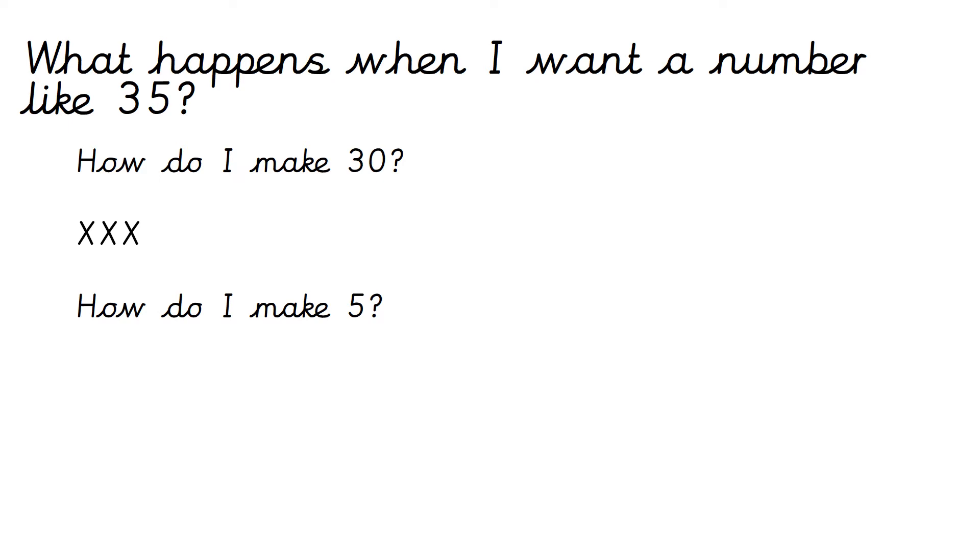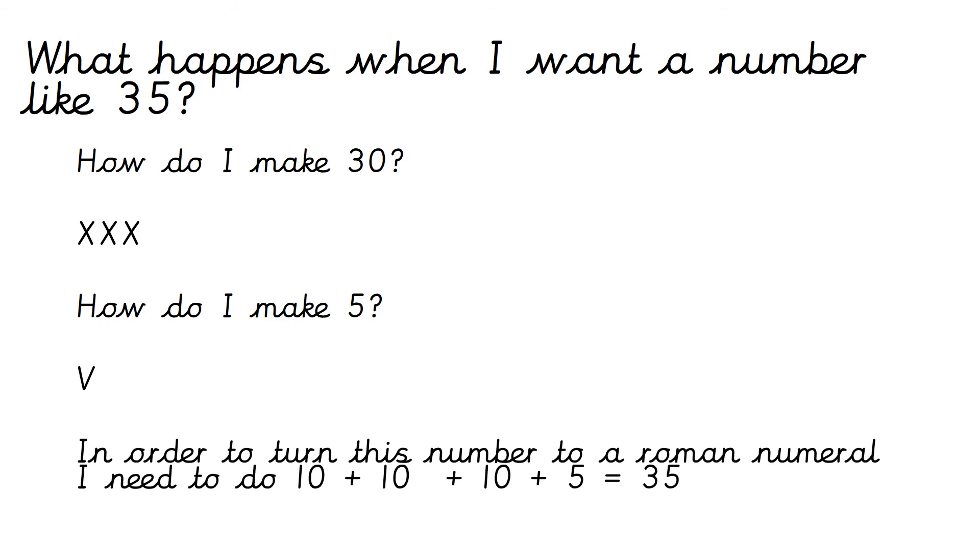And how do I make 5? Well I remember from the last slide that V equals 5. So in order to make 5 it would be a V. So if I wanted 35 I would bring that all together and it would be XXXV. So in order to turn this number to a Roman numeral I need to do 10 add 10 add 10 add 5 which would be 35.